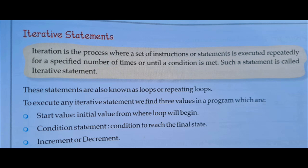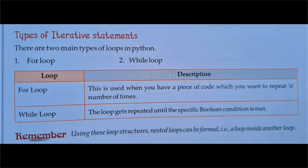To execute any iterative statement we need three values in a program: first, the start value — that means the initial value from where the loop will begin; then the condition statement to reach the final state; and then the increment or decrement value.